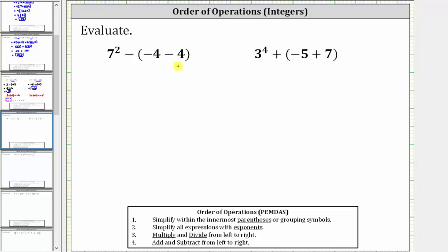We want to evaluate the given expressions. The first step is to simplify within the parentheses, which means for the first expression we need to determine negative four minus four. Negative four minus four is equal to negative eight, and therefore the expression simplifies to seven squared minus negative eight.